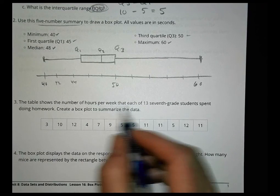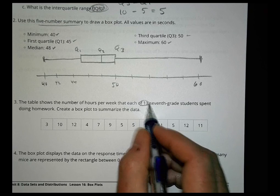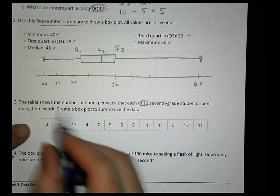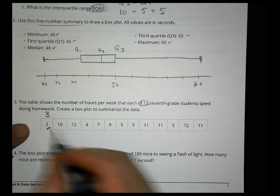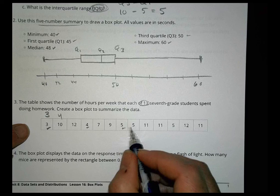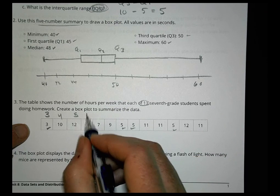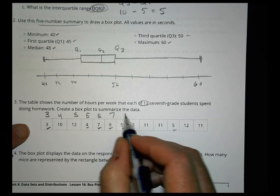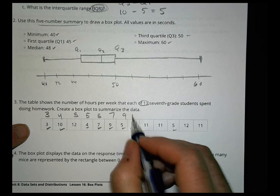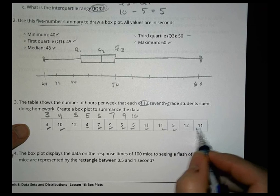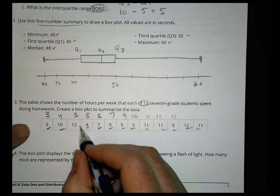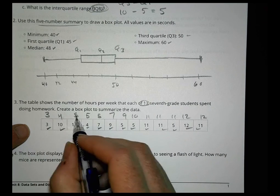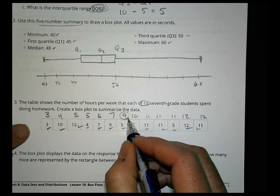Number three. The table shows the number of hours per week that each of thirteen seventh graders spent doing homework. Create a box plot. Well the first thing I want to do is put these numbers in order. So I'm going to rewrite them. I'm going to do three, and I have a four. I have three fives, I have a seven, I have a nine, I have a ten, I have three elevens, and two twelves. There are thirteen kids. So one, two, three, four, five, six, seven. That becomes my middle, that becomes quartile two.